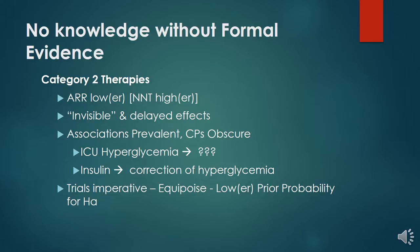Category two therapies are characterized by smaller absolute risk reductions and invisible, delayed effects — such as statins for prevention of cardiovascular disease. In this landscape, associations are prevalent and causal pathways are obscure. For example, ICU hyperglycemia is associated with mortality, but we don't know if that's causal, and we don't know if correcting it with insulin does anything to outcomes of interest. In this category, trials are imperative, and there is equipoise because of the lower prior probability of the alternative hypothesis.